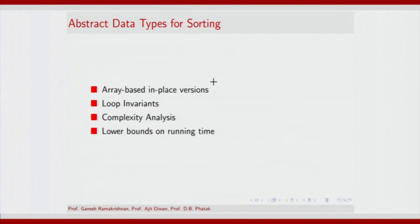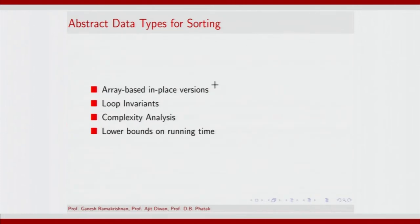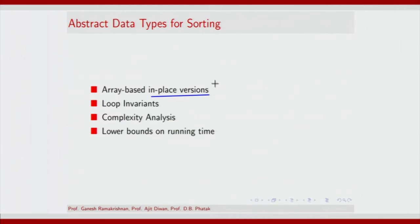We will discuss different implementations of the abstract data type, in particular the priority queue, and we will discuss how you could do away with the use of an explicit external abstract data type and embed the functionality of the data type within the array itself — that is what gives you the in-place variant. If the auxiliary memory consumed through the abstract data type does not grow with the size of the input, you can come up with the in-place equivalent variant.